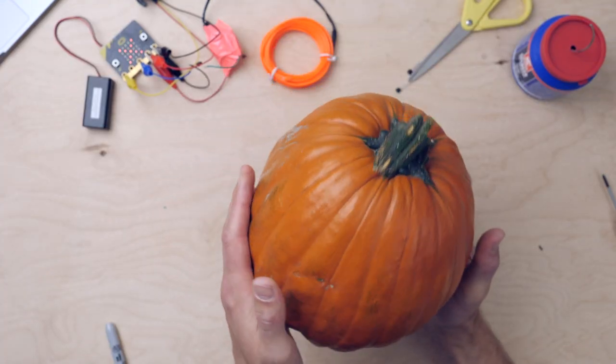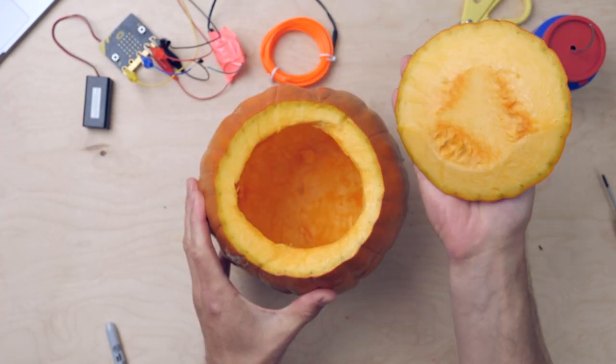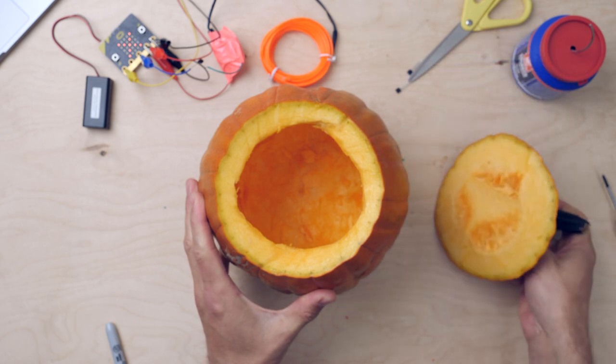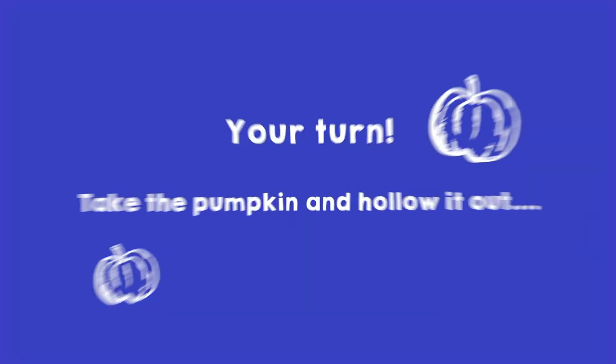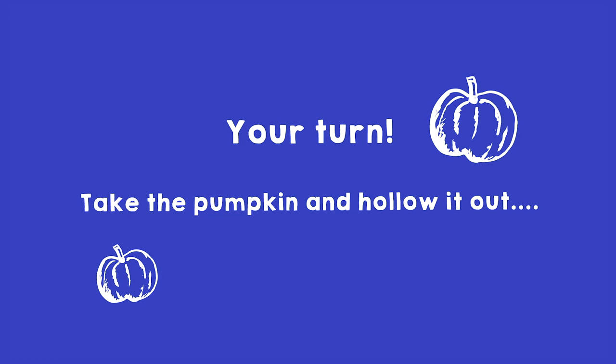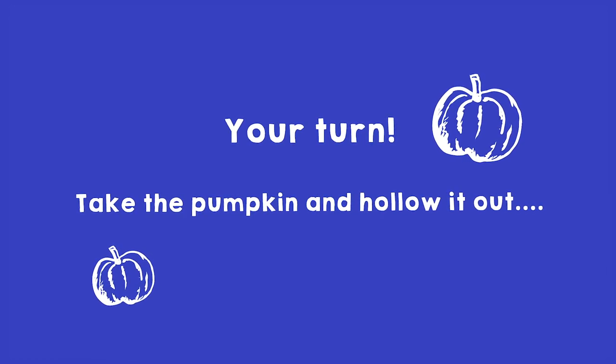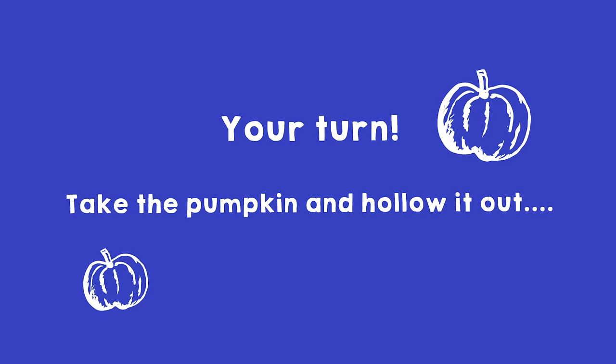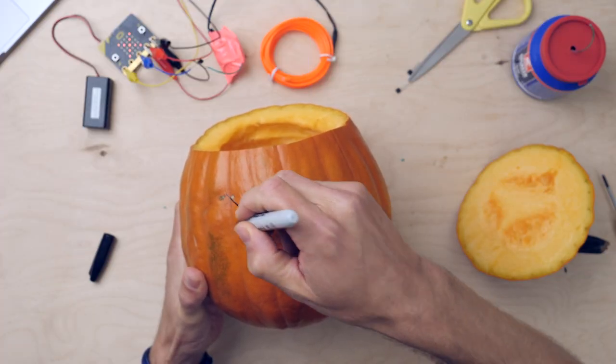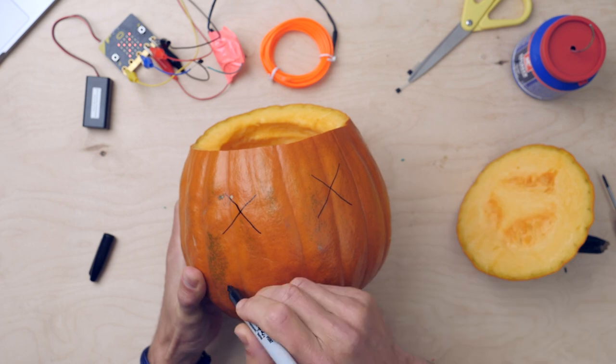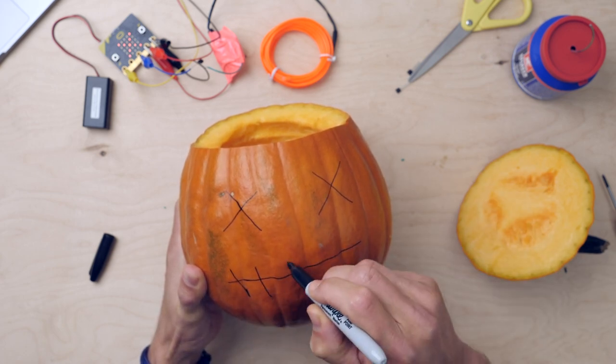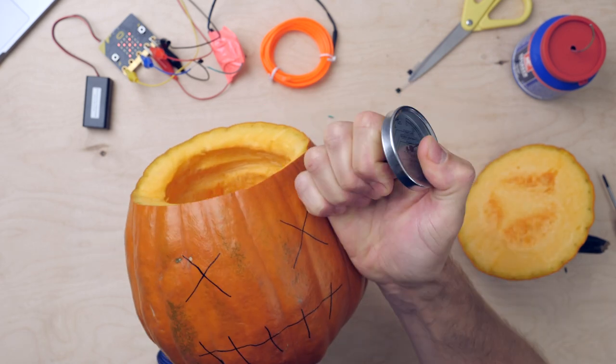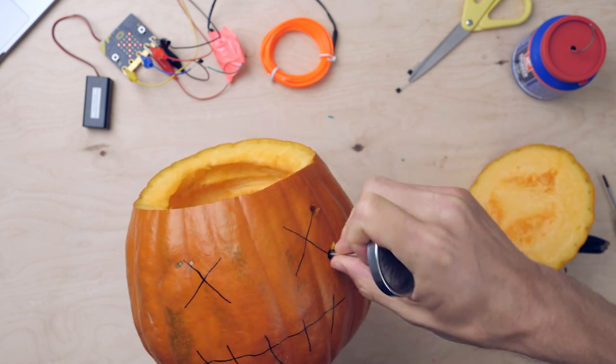Take the pumpkin and hollow it out. Use a Sharpie to draw a face. I'm drawing this face but of course you should use your own imagination and draw the face that you like. Make some holes.